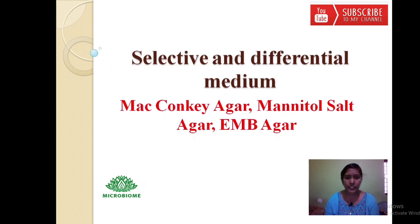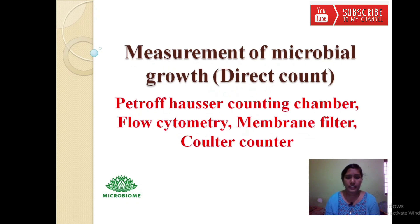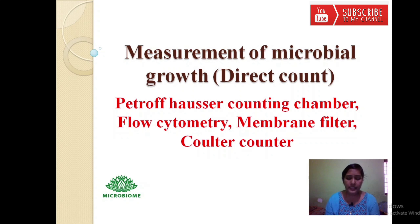Selective and differential media include MacConkey agar, mannitol salt agar, and EMB agar. Methods for direct count measurement of microbial growth include the Petroff-Hauser counting chamber, flow cytometry, membrane filter, and Coulter counter. In the Petroff-Hauser chamber, 25 squares cover a 1 mm square area with a depth of 0.02 mm. In flow cytometry, light scattering represents cell count; in the Coulter counter, assessment is based on electrical resistance.